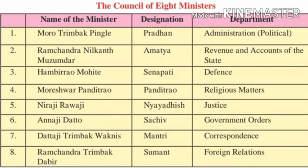Seventh, Dattaji Trimbak Vakhanes — designation Mantri, department Correspondence. And the last, Ramchandra Trimbak Dabir — designation Sumant, department Foreign Relations. Students, you must learn and remember the Council of Eight Ministers because many questions in your exam and competitive exams are based on it. So learn it carefully.